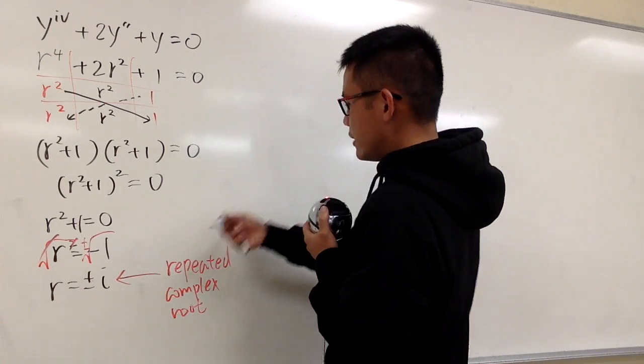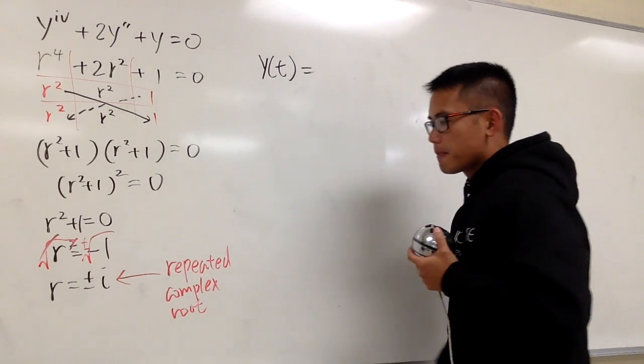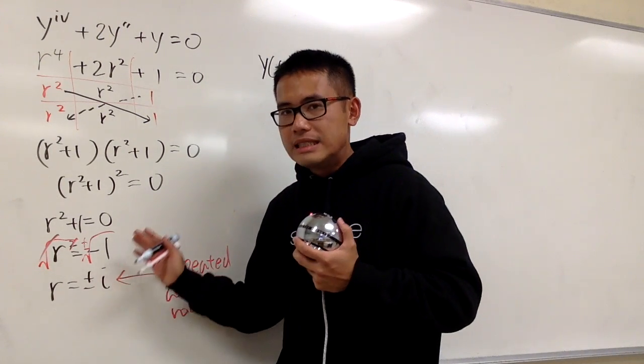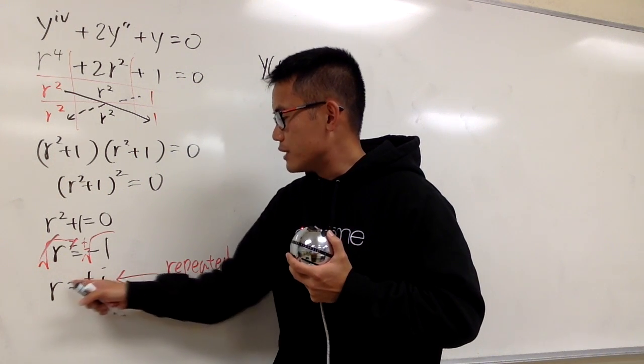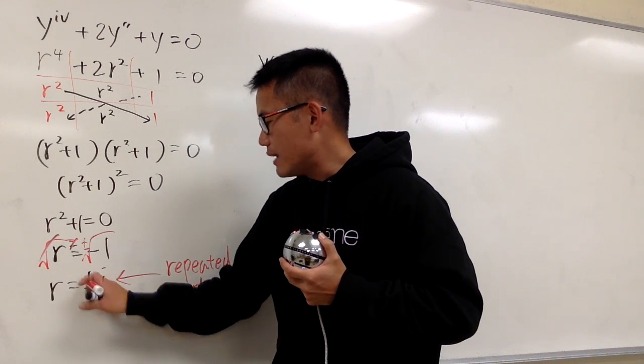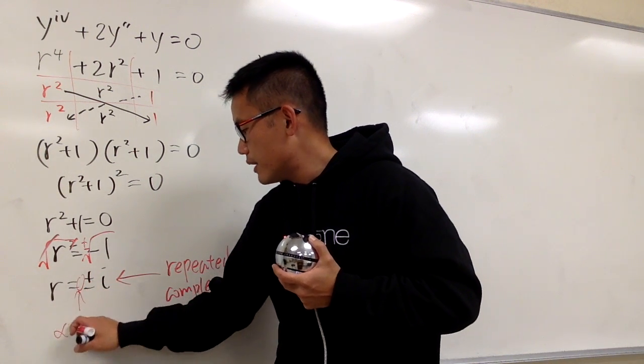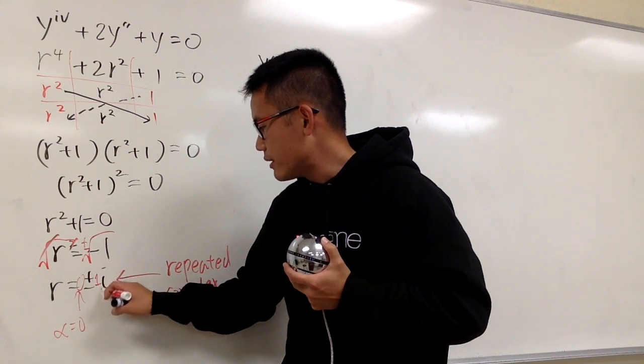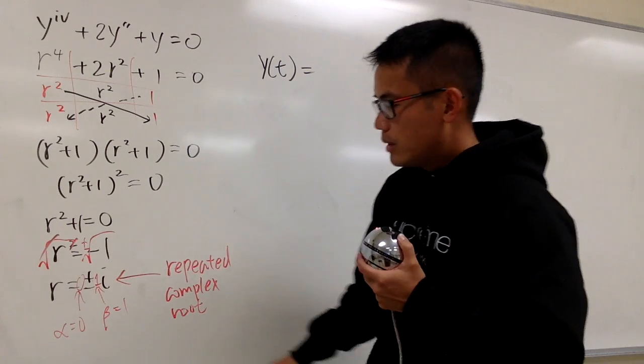Anyways, I can tell you guys what the answer is already. y of t. Ignore the fact that it's repeated complex root. Based on the fact that you have just r equals to plus minus i, you know the alpha is 0. Alpha is equal to 0, and then you have the beta is equal to 1.